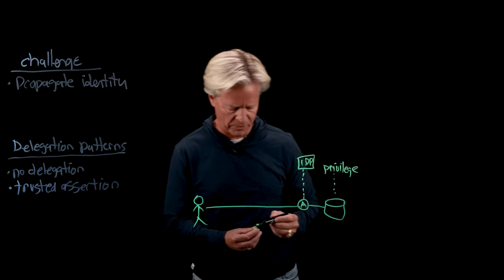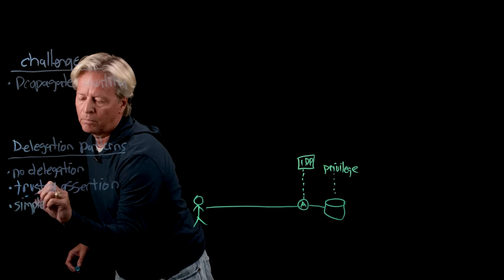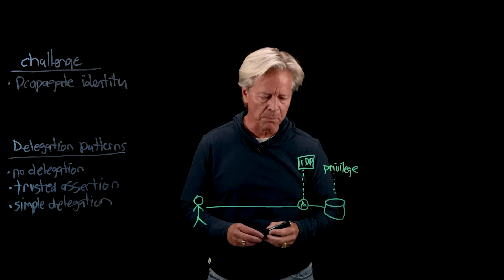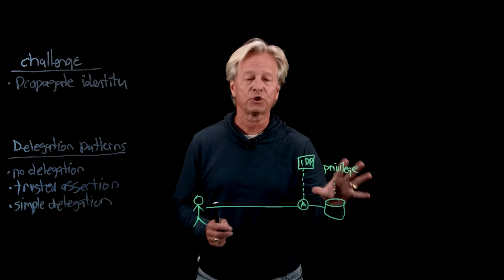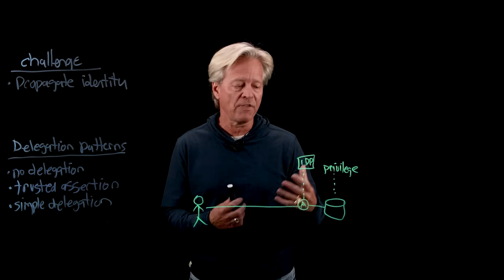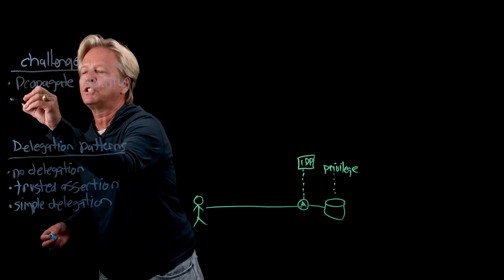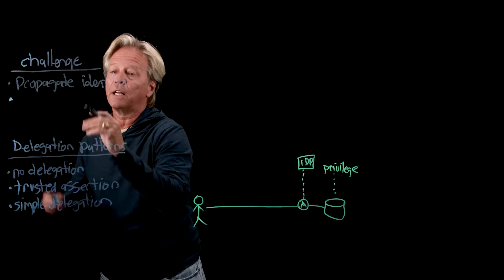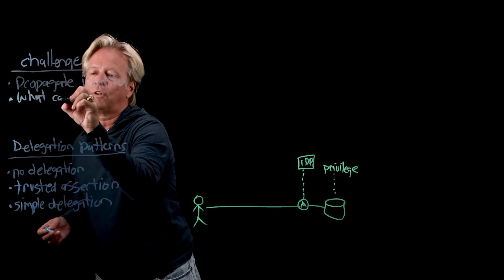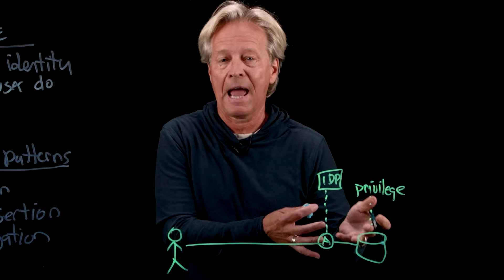There's another pattern called simple delegation. In simple delegation, instead of asserting who the user is, I'm going to come in, authenticate myself, and create a token. That token gets passed back and becomes what I'm using for privilege. So the challenges we're really looking at are: how are we propagating this identity, what can the user do, what am I allowed to access, and what actions am I allowed to take?